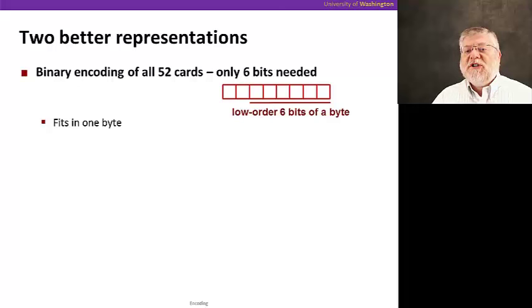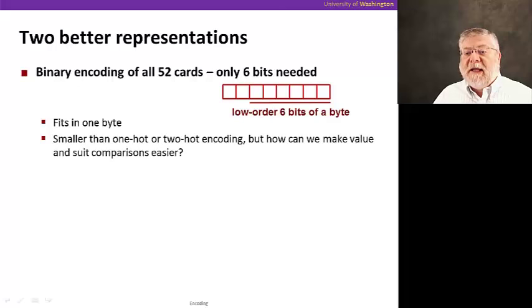Let's continue with this exercise and look at two possibly better representations. We could just do a binary encoding of all 52 cards. We only need six bits to represent 64 different numbers, so we can take care of 52 in just six bits. That would allow us to fit a card into just a byte and use the low order six bits to do that. So that's kind of nice. It all fits in one byte.